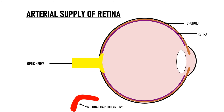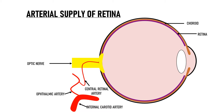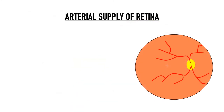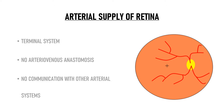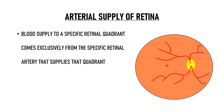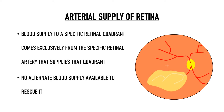The ophthalmic artery is a branch of the internal carotid artery, and the central retinal artery arises from this ophthalmic artery. In the orbit, the central retinal artery pierces the optic nerve sheath to enter the optic nerve at its inferior surface. Within the optic nerve, it divides into two major trunks — the superior division and the inferior division — which further branch into nasal and temporal branches to supply all four quadrants of the inner retina. This retinal arterial system is a terminal system, meaning there are no arteriovenous anastomoses and no communication with any other arterial systems. Thus, if there is any blockage of an arterial branch, it results in infarction of that quadrant because there is no alternate blood supply available.